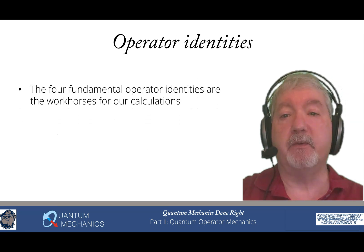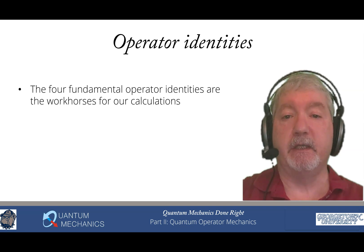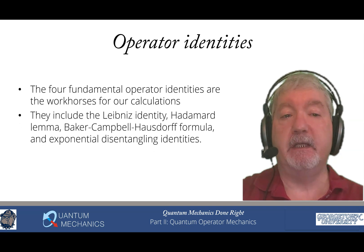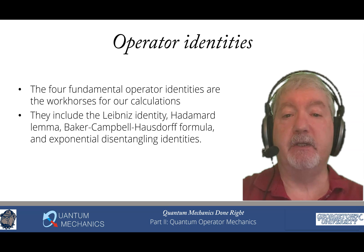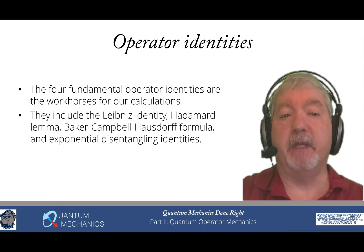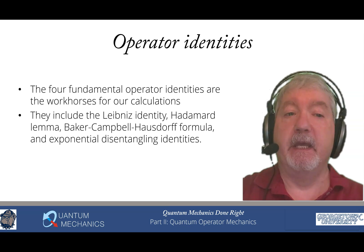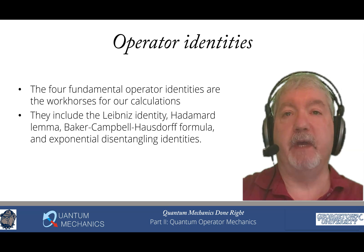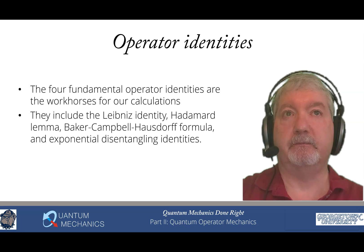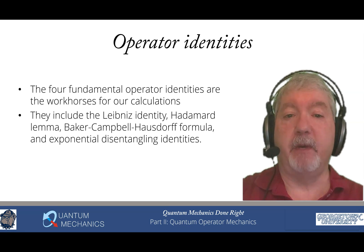Then we move on to the next chapter, which summarizes our operator identities — the four workhorses for our calculations. They include the Leibniz identity, the product identity for commutators, the Hadamard lemma (which allows us to do similarity transformations using exponential operators of operators), the Baker-Campbell-Hausdorff formula (which allows us to take the product of two exponentials and make it into one exponential), and the exponential disentangling identities, which allow us to evaluate exponentials of objects that form part of a Lie group in terms of other Lie group elements — a very powerful identity.